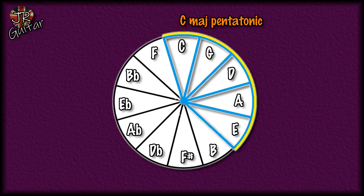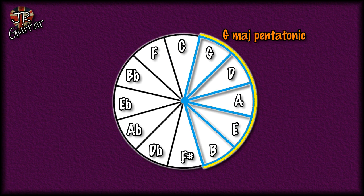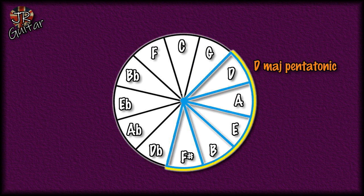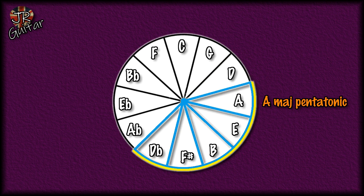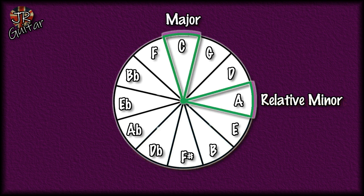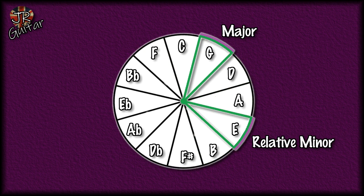If you want the G major pentatonic scale, you just take the first five steps of the cycle starting from G. D major pentatonic is the first five steps starting from D. The first five steps starting from A gives you the A major pentatonic scale. And if you know your relative majors and minors, C major is the A minor pentatonic, D major is the B minor, G major is the E minor, and so on.